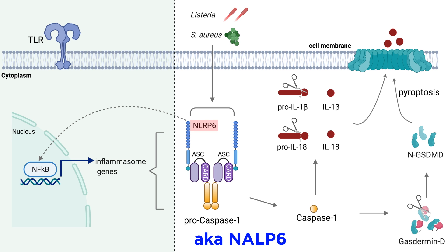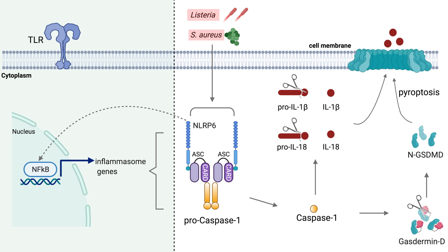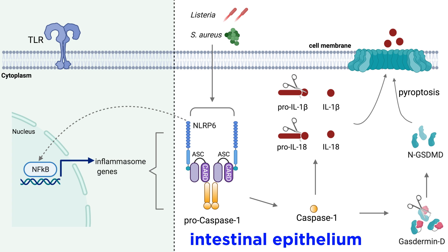NLRP6, also known as NLP6, is a more recently discovered member of the NLR inflammasome family. It is unique among inflammasomes in that it can activate the transcription factor NF-kappaB, similar to a pattern recognition receptor. NLRP6 senses bacterial infections such as Listeria and Staphylococcus aureus, as well as some viral infections. NLRP6 is highly expressed in the intestinal epithelium and may be involved in controlling the composition of the gut microbiota.